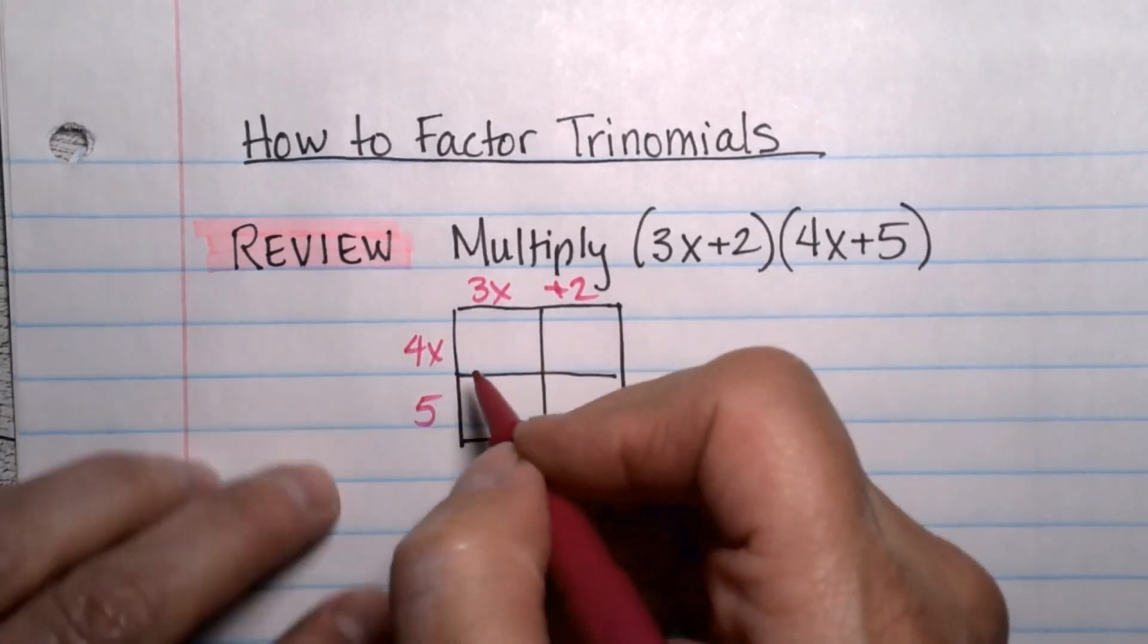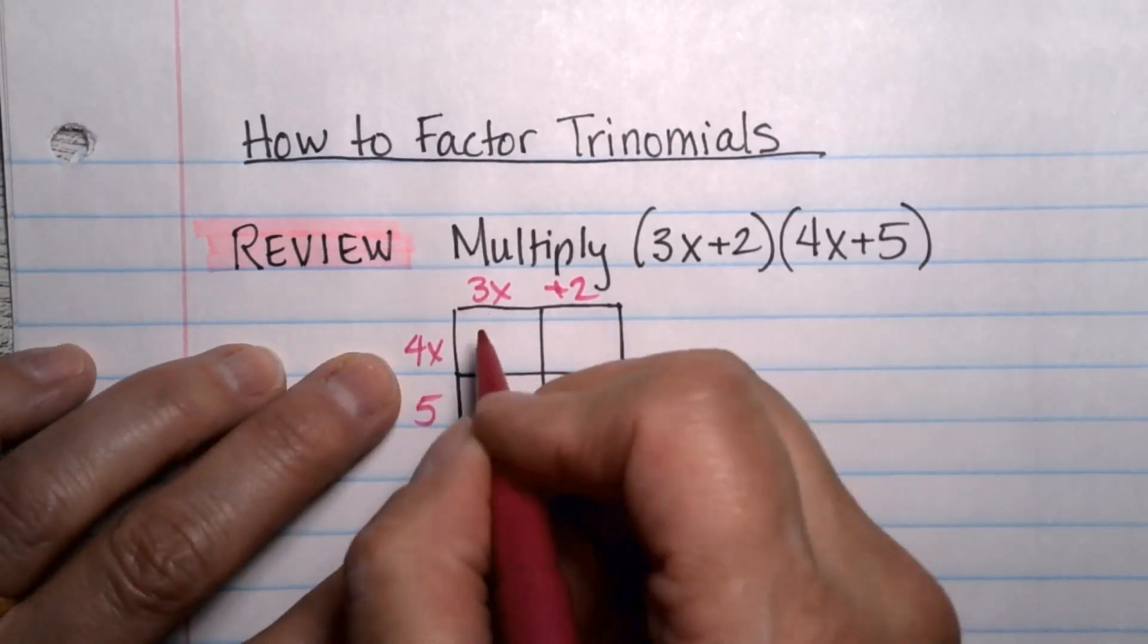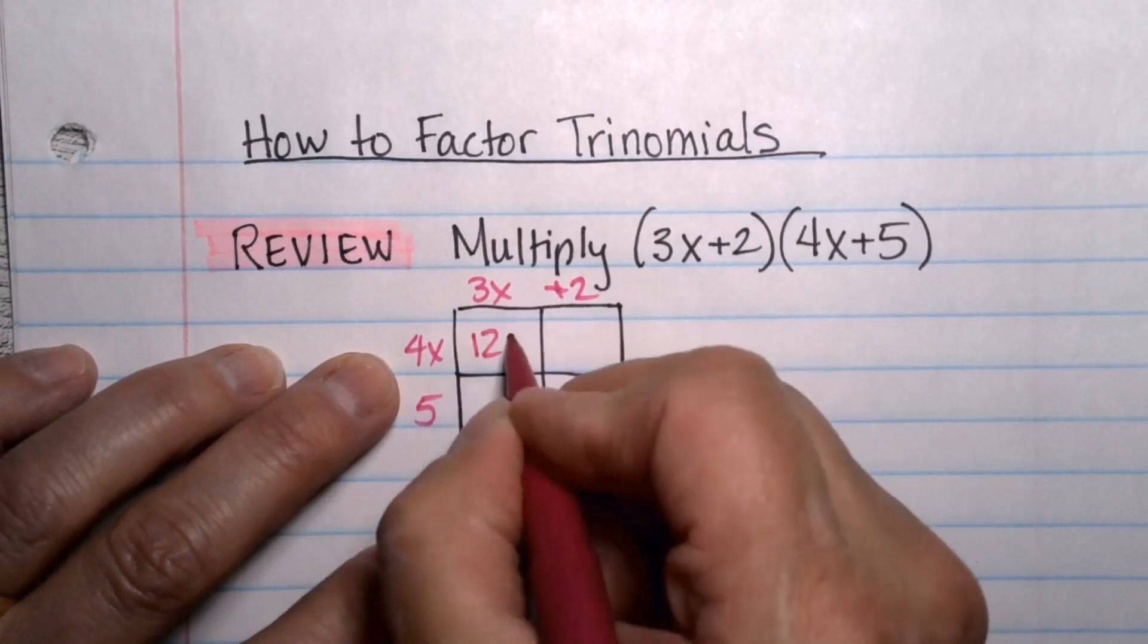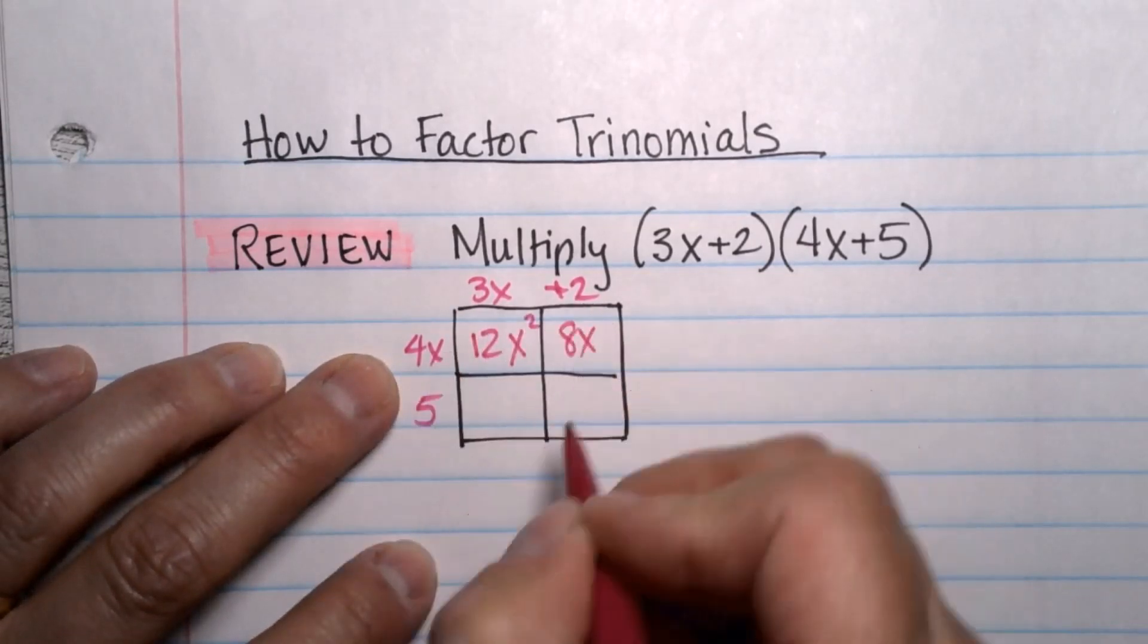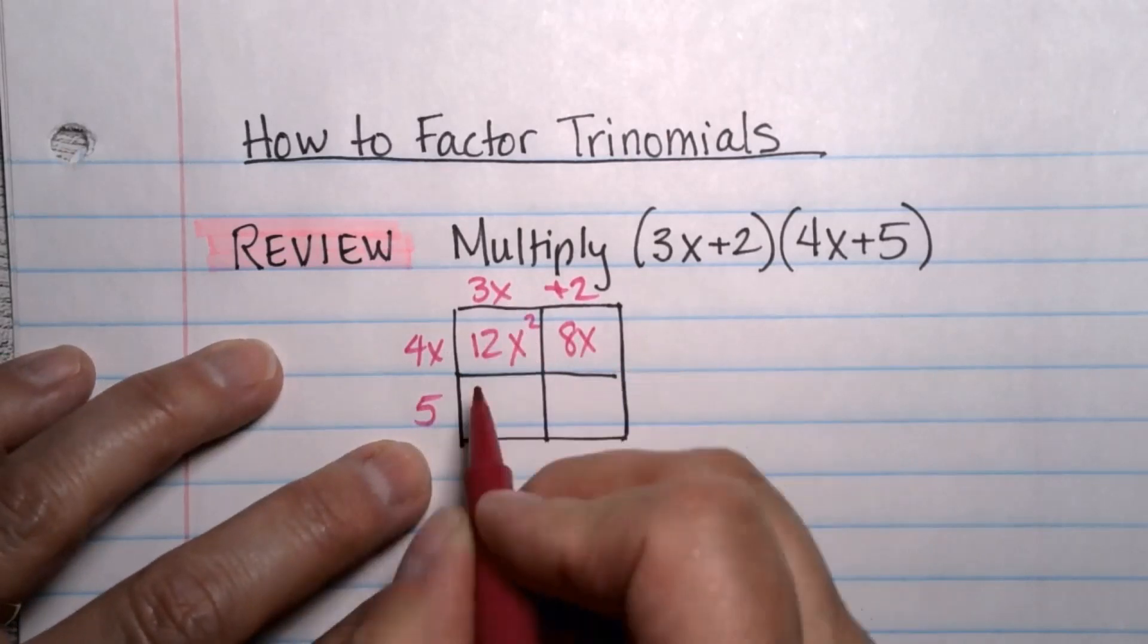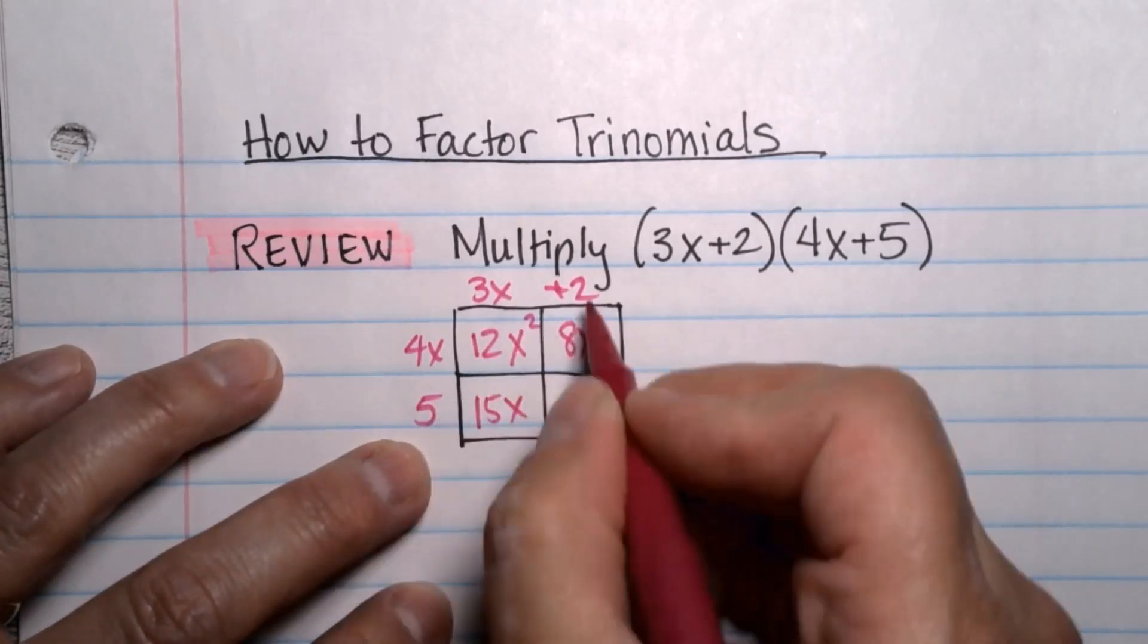Multiplying out, 4 times 3 is 12, x times x is x squared, 4x times 2 is 8x, 5 times 3x is 15x, and 5 times 2 is 10.